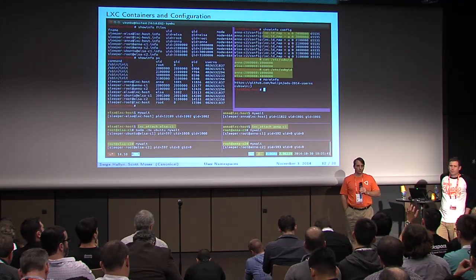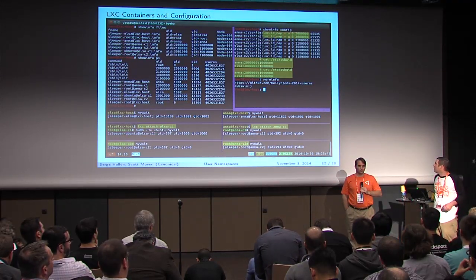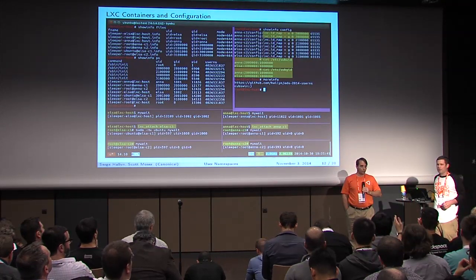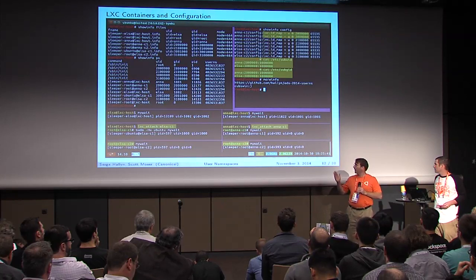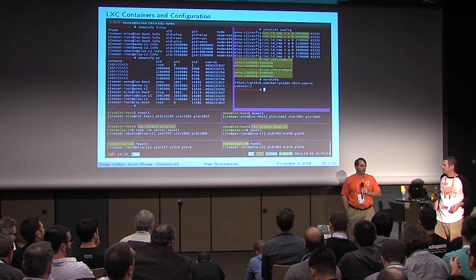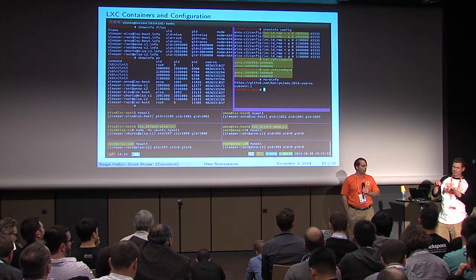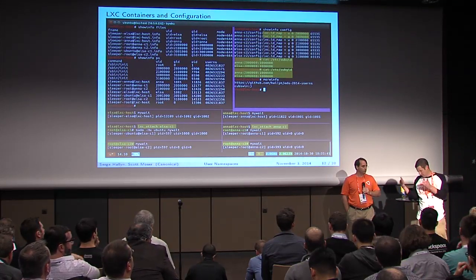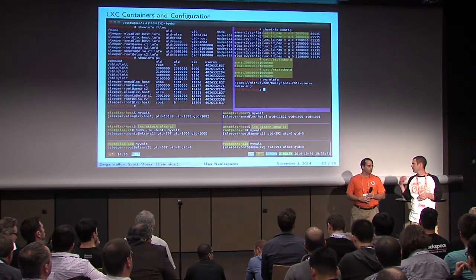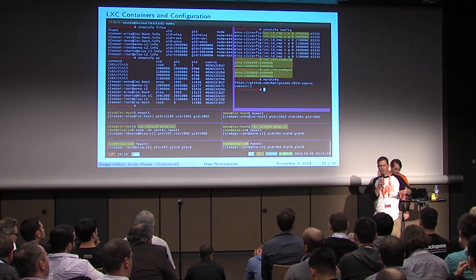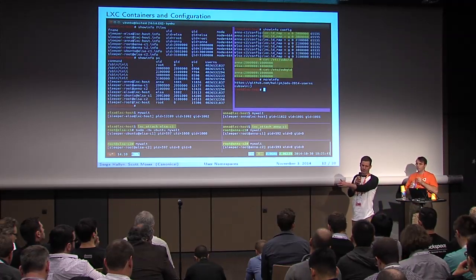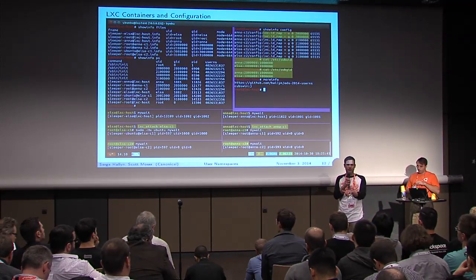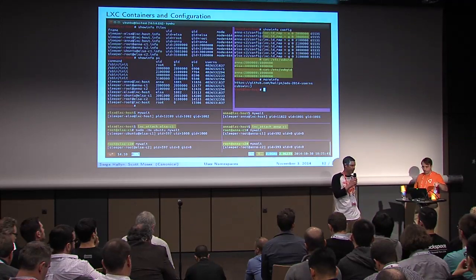Q: So you're not manually tracking ID spaces? A: It depends on how flexible you need to be. You can use defaults, but manual allocation was done here to exceed default allocations. For Nova Compute Flex, the plan is to give the Nova Compute Flex user the entire UID range, and let it manage the sub-allocations to each container.